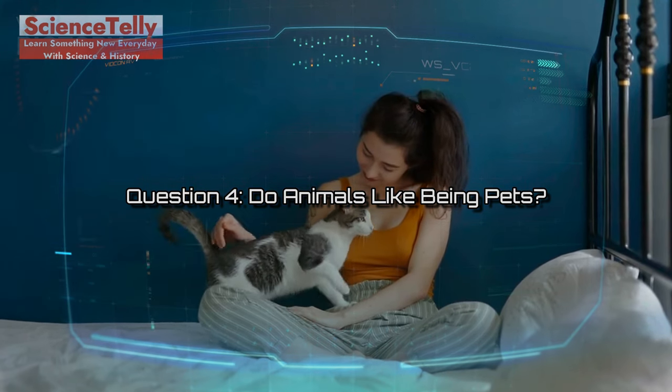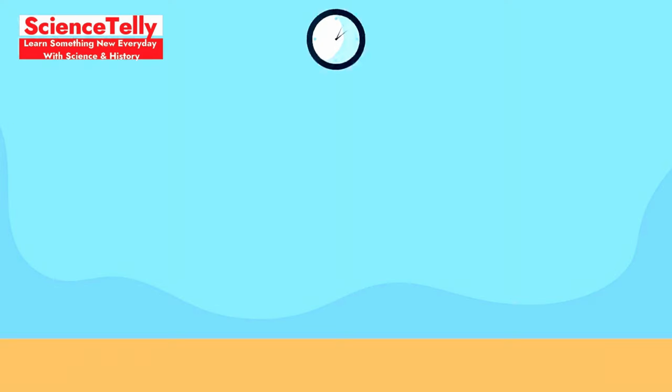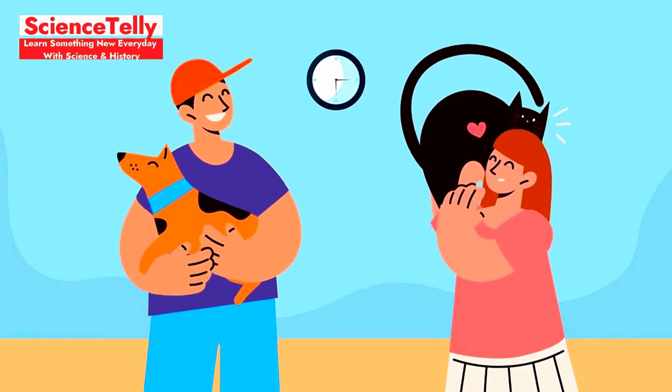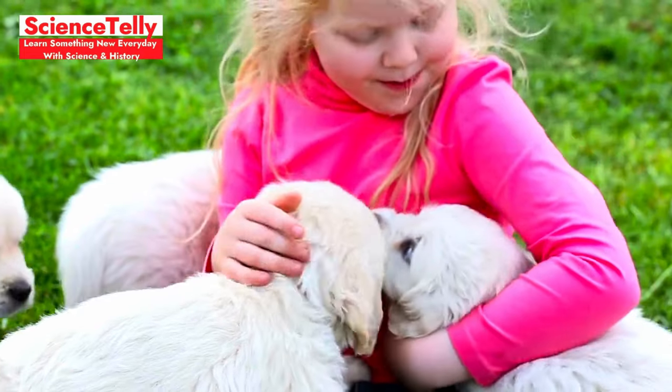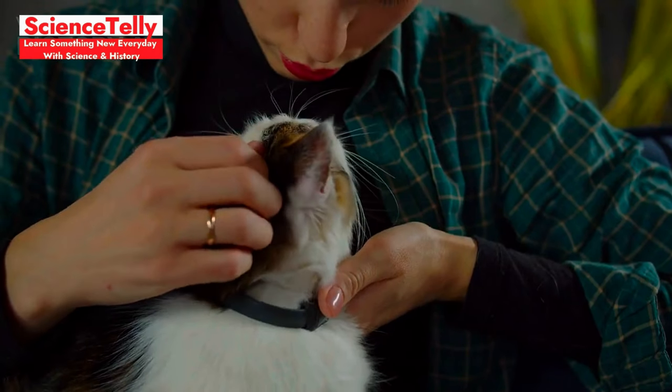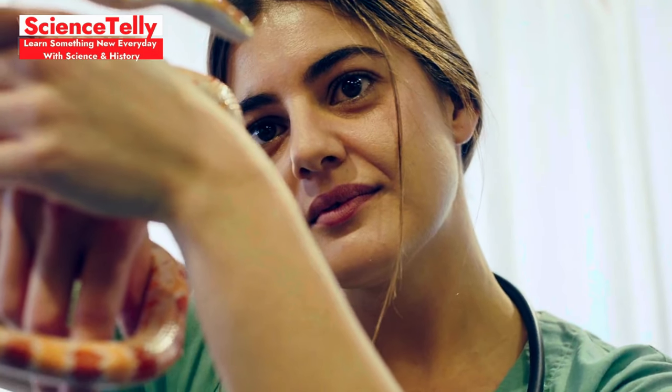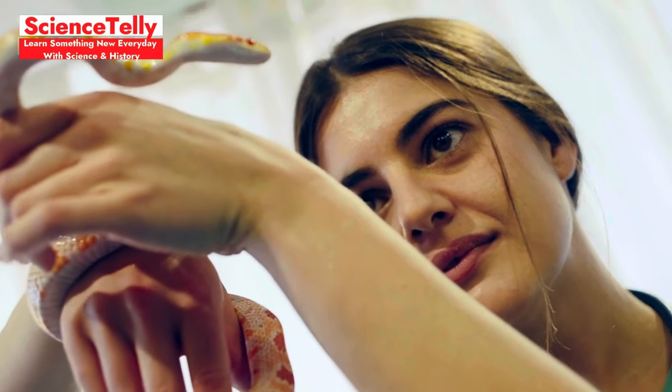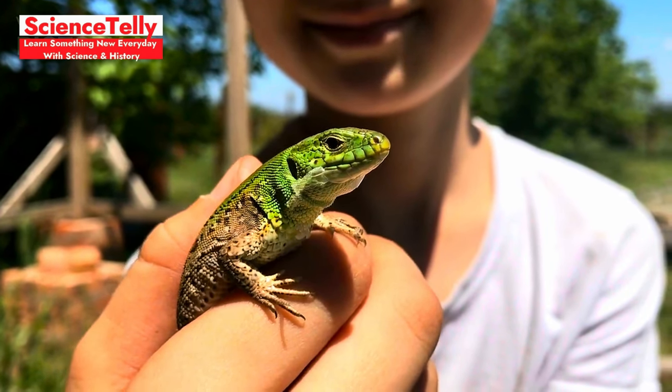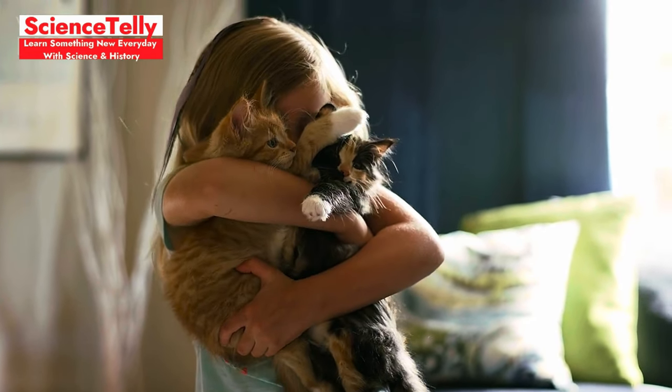Question 4. Do animals like being pets? Here's an interesting question to consider. For animals like dogs and cats, which have been domesticated for thousands of years, there's evidence they do bond with humans and enjoy our companionship. Studies show that dogs, for instance, can form attachments to their owners that are similar to the bonds between parents and children. Cats, although a bit more independent, also show affection and recognize their humans as part of their family. But when it comes to exotic pets, like reptiles or wild animals, we can't really be certain if they like being pets. These animals don't have the same history of domestication and may simply be adapting to their environment to survive. So while some pets clearly enjoy being with us, others might just be getting by.